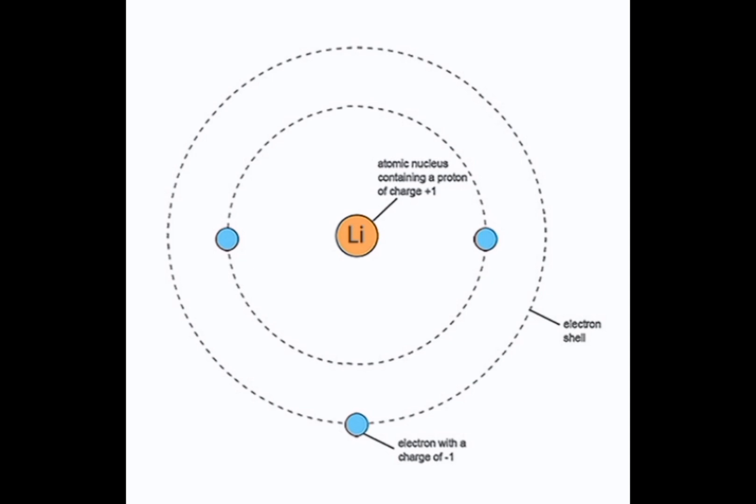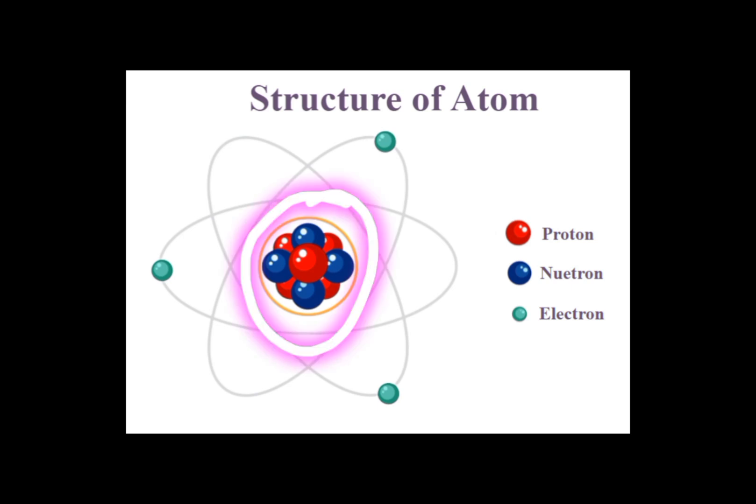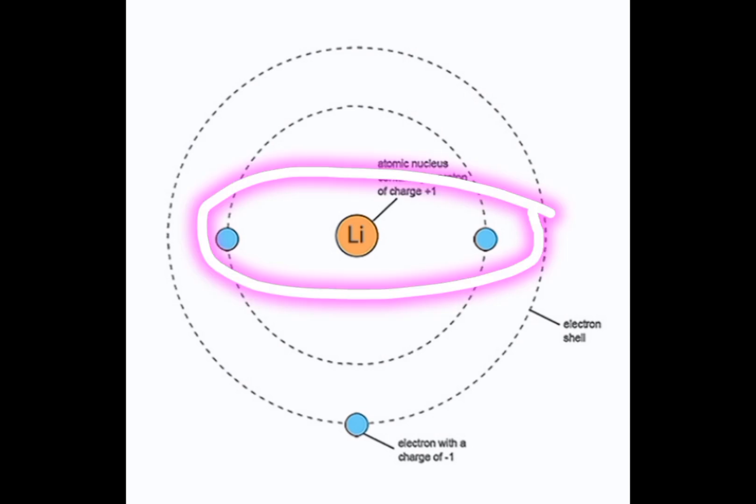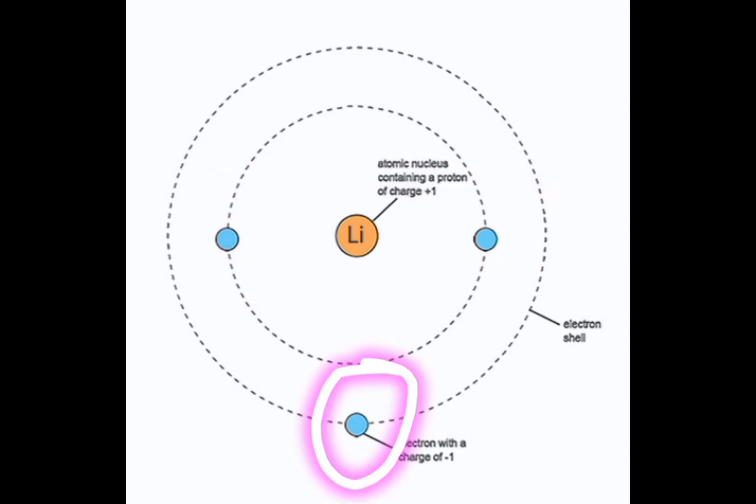Protons and neutrons are contained in the innermost shell known as nuclei, while outermost shell contains electrons. Arrangements of lithium electrons are two, then one electron exists in the outermost shell.